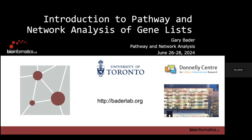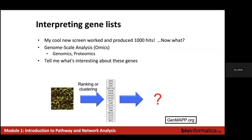The main motivation for all the analysis methods that we're going to learn about at this workshop is that we've done an experiment and it's generated a lot of genes that are somehow interesting. So maybe we measured gene expression in tumor samples versus normal, or compared two conditions where we found thousands of genes that were differentially expressed, or maybe we did a genome-wide association study and found a bunch of SNPs associated with a phenotype linked to hundreds of genes, or a proteomics experiment where we pulled down a protein and found a whole bunch of proteins that bound to it.